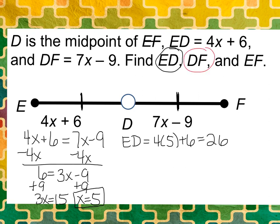Let's go ahead and do DF. DF is going to equal 7 multiplied by 5 minus 9. So now we get 35 minus 9.